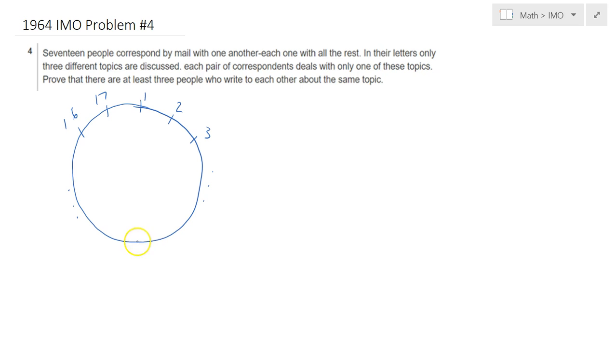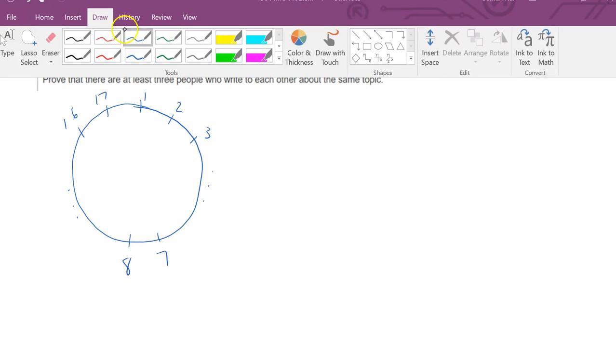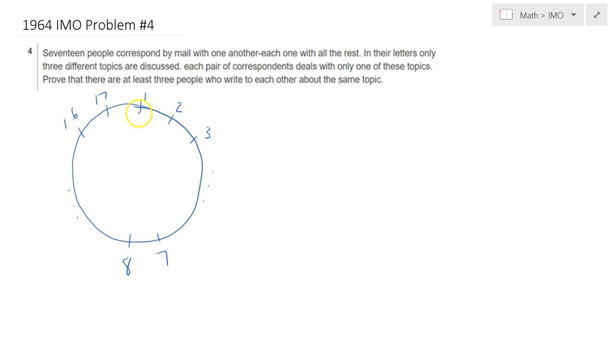So we would have all the people around this table. Now what is fancy is that each of these people will correspond with every other person in the room. So for instance person 1 will have a correspondence with all the other 16 people. And so on.